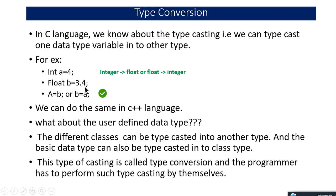But can we do the same thing for user-defined data, for example class objects? Yes, it is possible. One can typecast one class object into another class, or to a basic data type, or from a basic data type to a class. This type casting is called type conversion where a class is involved, and programmers have to write the code themselves in their class to perform this kind of casting.